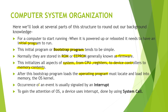The occurrence of an event is usually signaled by an interrupt. If there is an event to occur, devices will signal an interrupt to gain the attention of the OS. A device uses an interrupt done by using a system call. We will look at system calls further in our next videos.